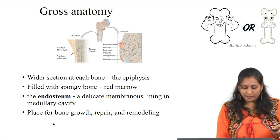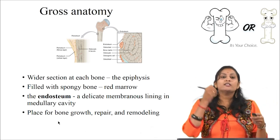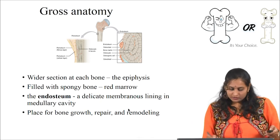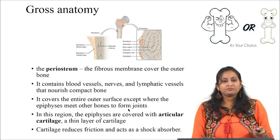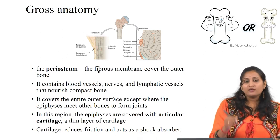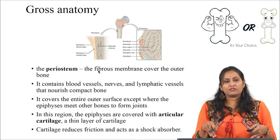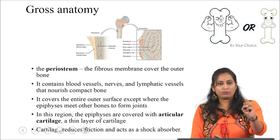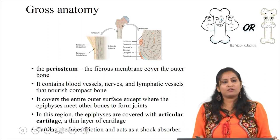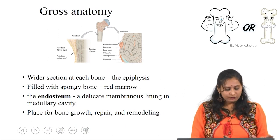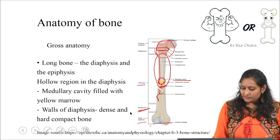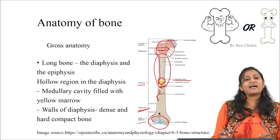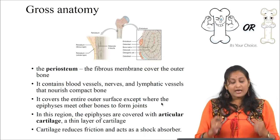Bone growth, repair, and remodeling — and the cellular components involved — will be explained in detail in a later part of this session. The periosteum is the fibrous membrane covering the outer surface of the bone. It has blood vessels, nerves, and lymphatic vessels that nourish the compact bone. The periosteum covers the entire outer surface of the bone except at the epiphysis region, where there is articular cartilage. The articular cartilage acts as a shock absorber and reduces friction.